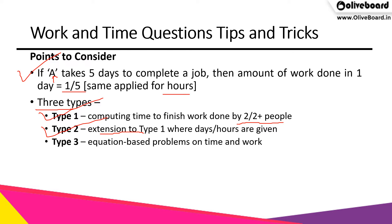The type 2 question is an extension of type 1, where days and hours are both given — for example, how many days will they take if they work together for eight or nine hours per day. That is an additional constraint. Type 3 questions are equation-based problems on time and work. They can be confusing because you will have three or four equations and must find the answer from them.